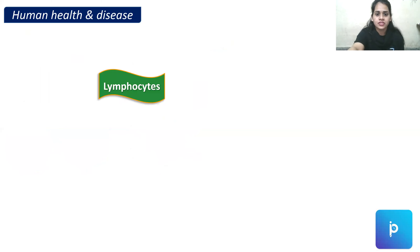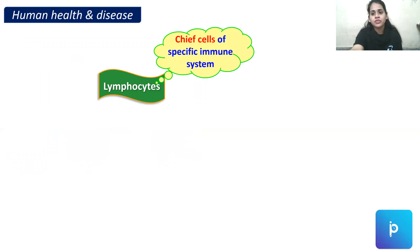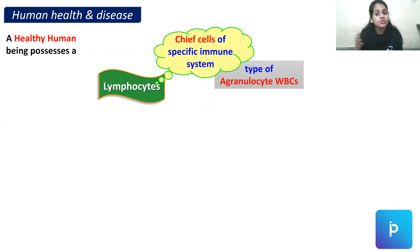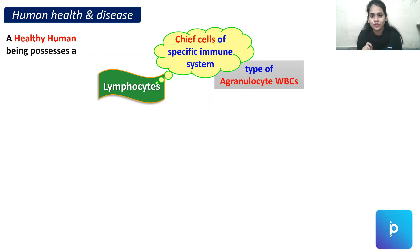Lymphocytes are the chief cells — the most important cells — of our immune system. They are a type of agranulocyte WBC. WBCs are divided into granulocytes and agranulocytes. Granulocytes have granules; agranulocytes do not. Agranulocytes include lymphocytes and monocytes, while granulocytes include neutrophils, eosinophils, and basophils. So lymphocyte is a type of agranulocyte WBC.